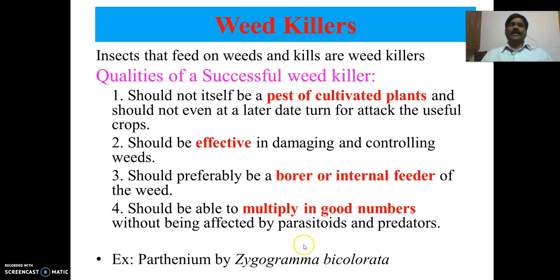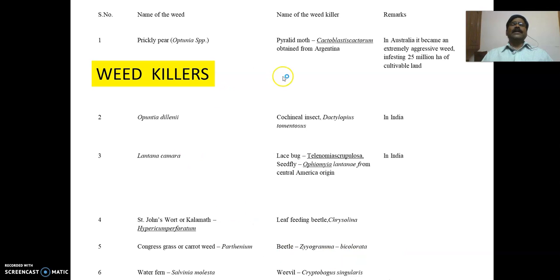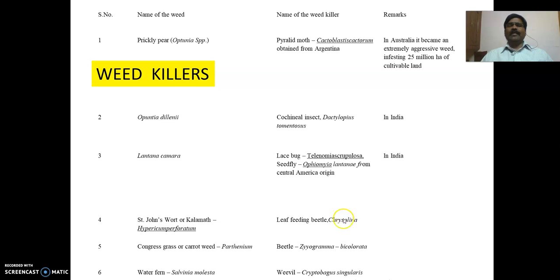One example mentioned here is Zygogramma bicolorata, which is a weed killer of parthenium weed. The following list is very important: prickly pear weed is controlled by the pyralid moth; it is also controlled by the cochineal insect. Then there are weed killers for congress grass, parthenium, water fern, and water hyacinth. The weed names, weed killers, and their scientific names are very important.